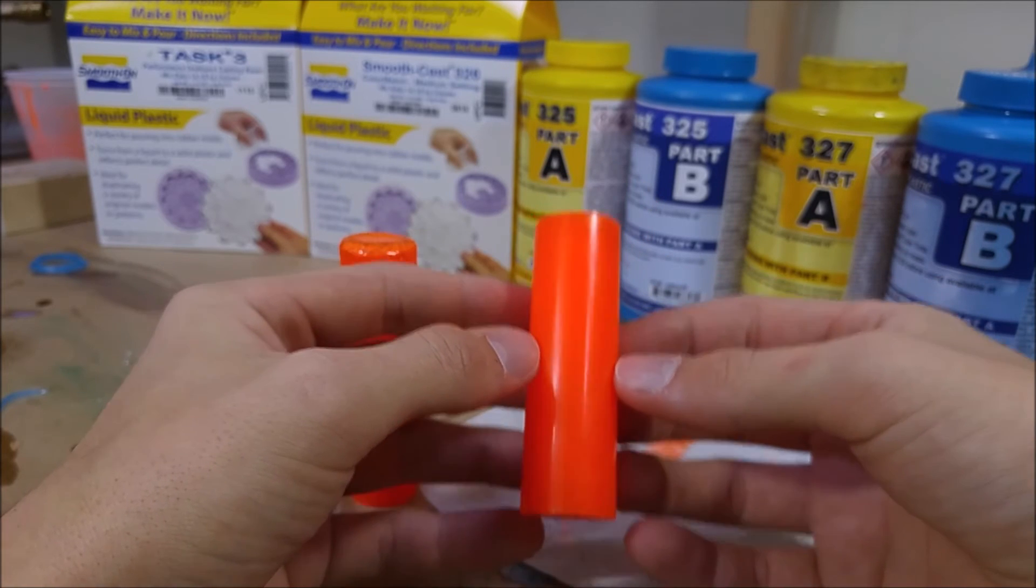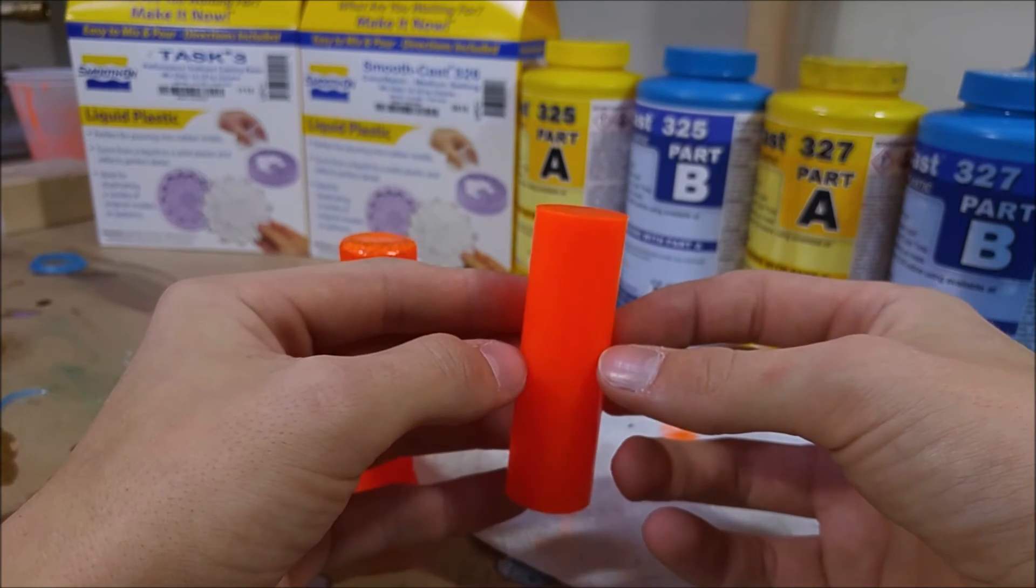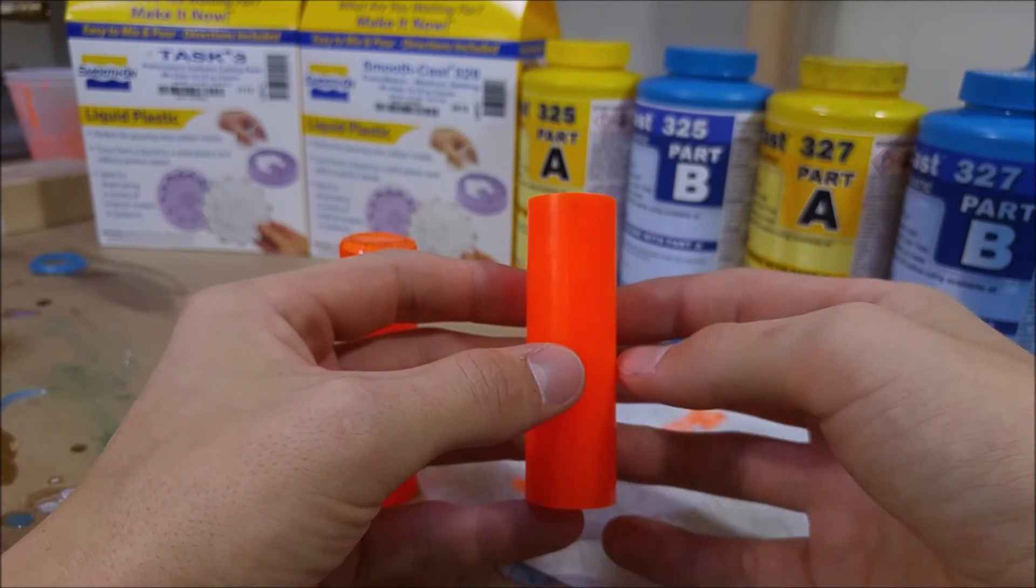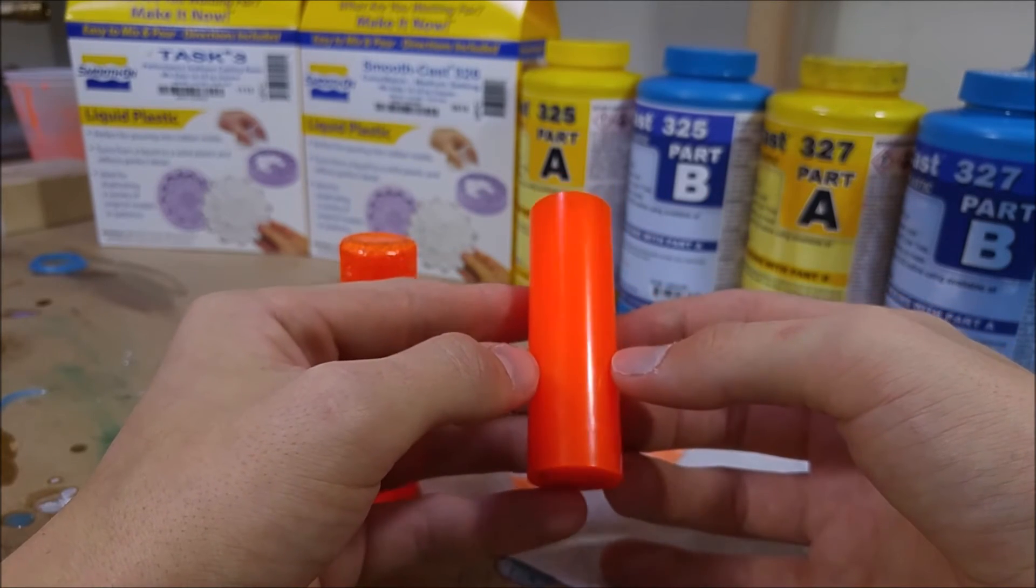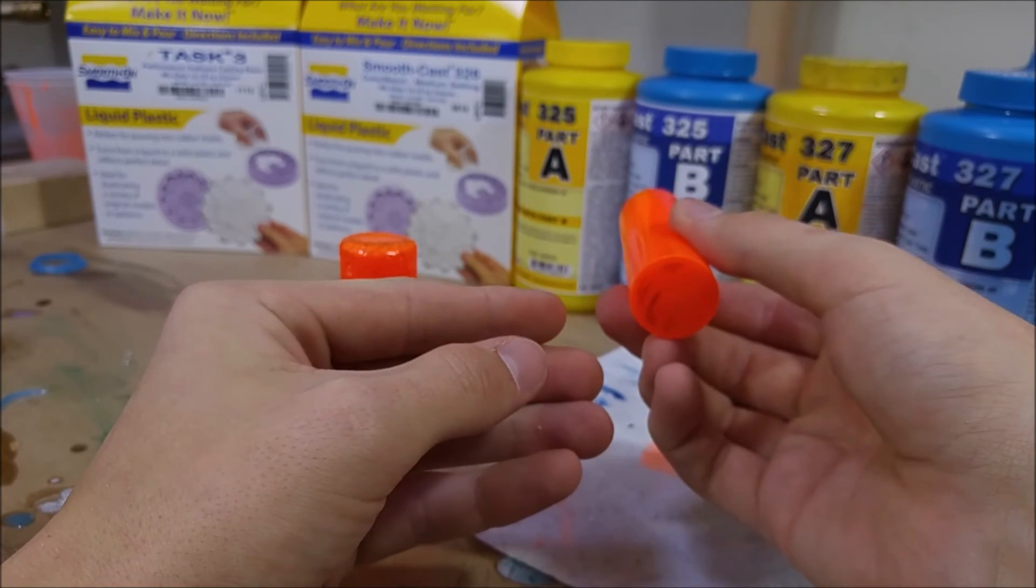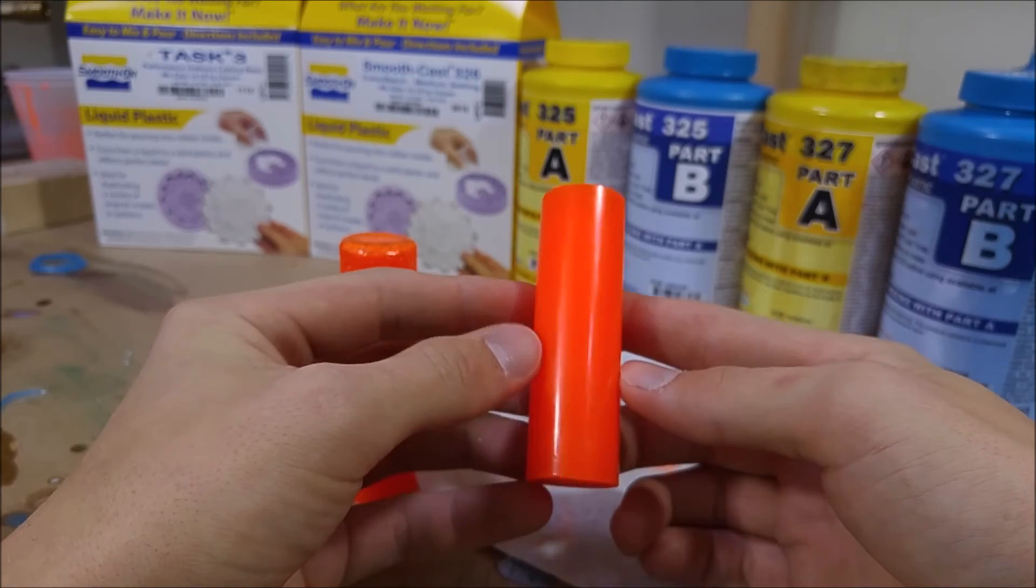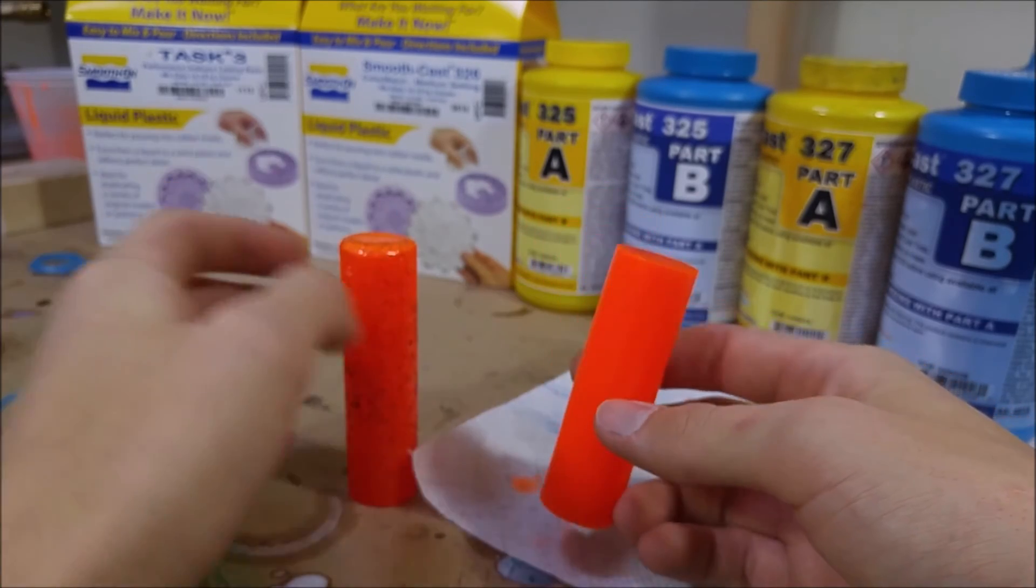However, they take a long time to cure. This part took three and a half hours. It technically takes two to four hours depending on the temperature in the room. Whereas something like the 325, that guy right back there, that can cast in like 10 to 15 minutes and you can pull it from a mold.